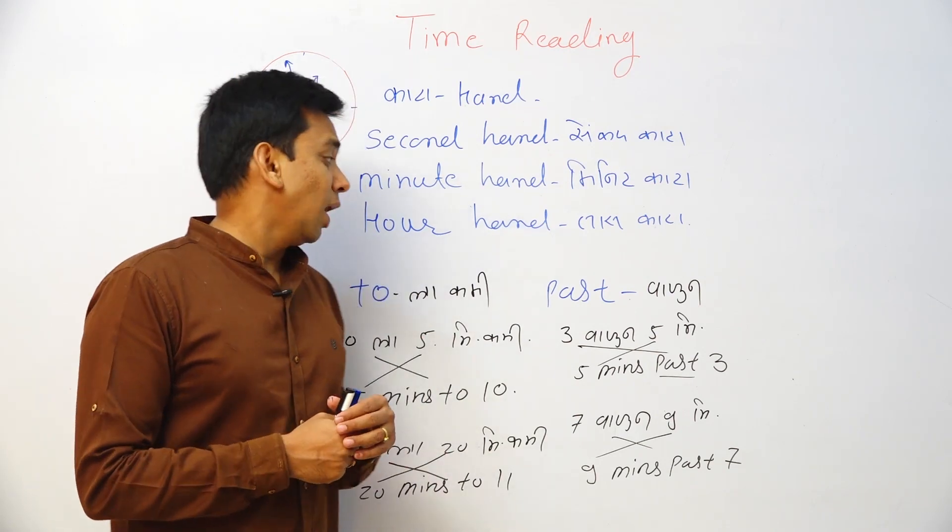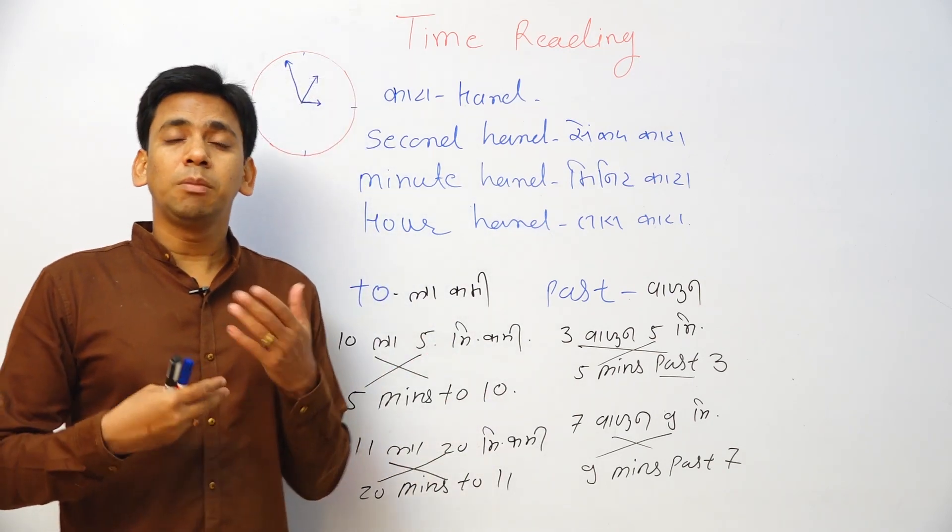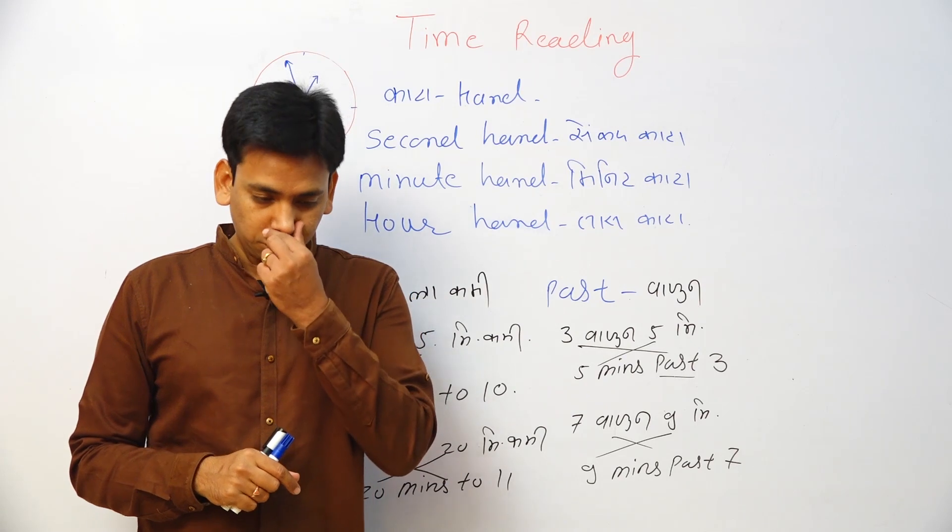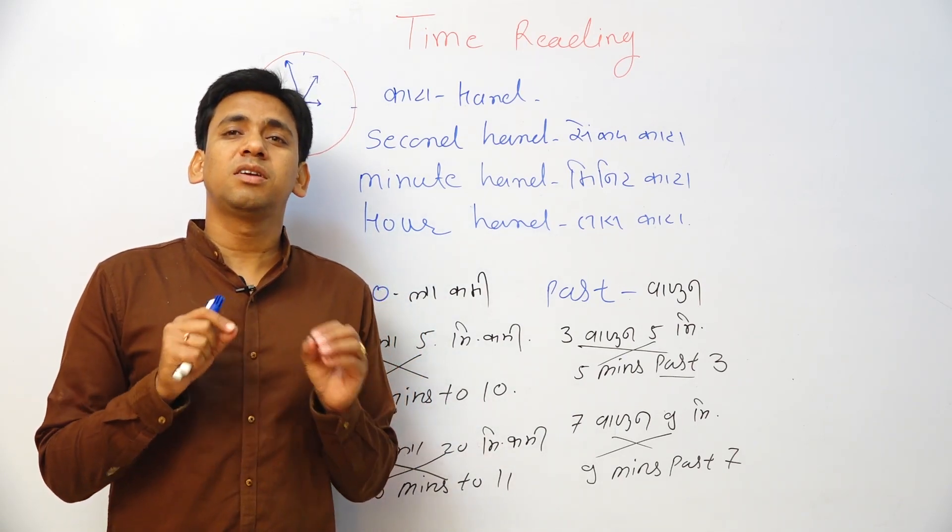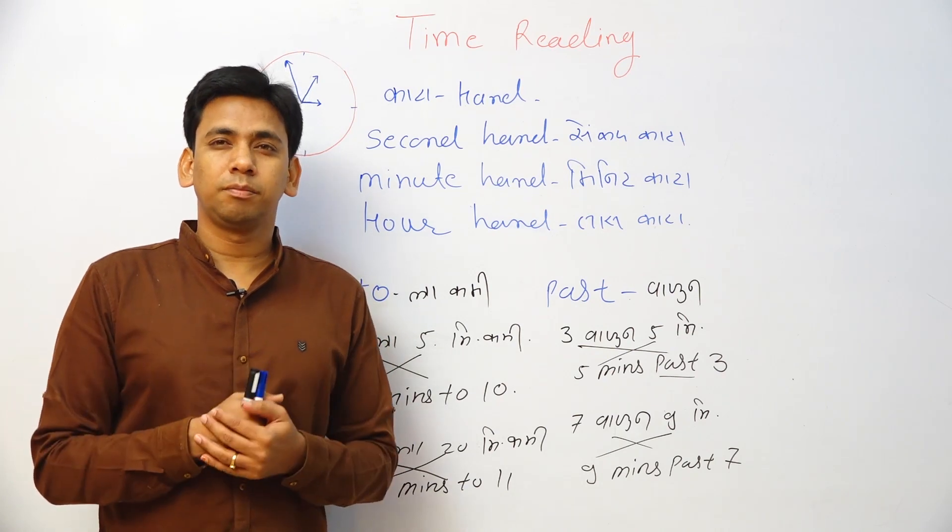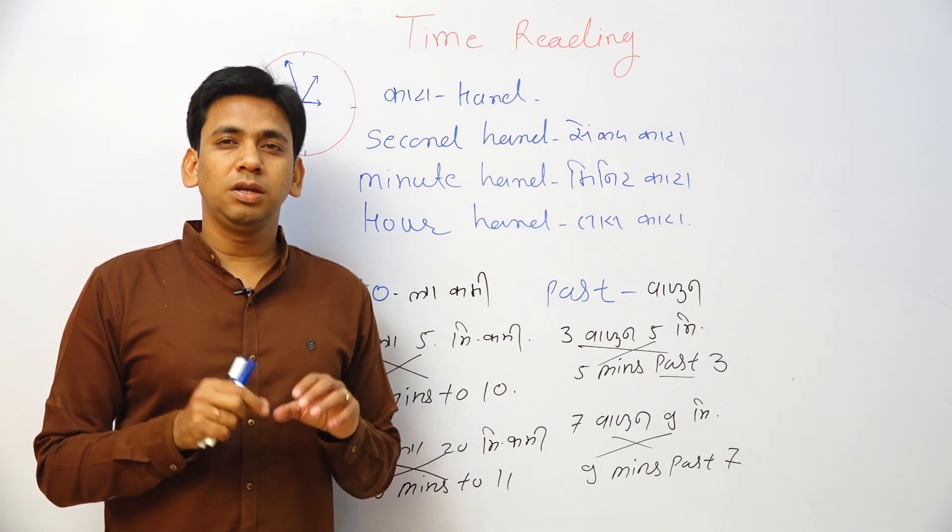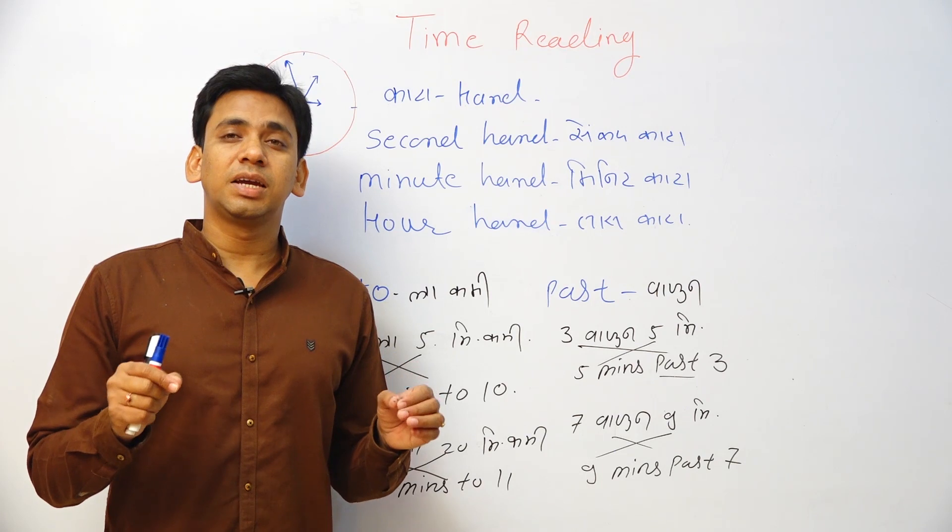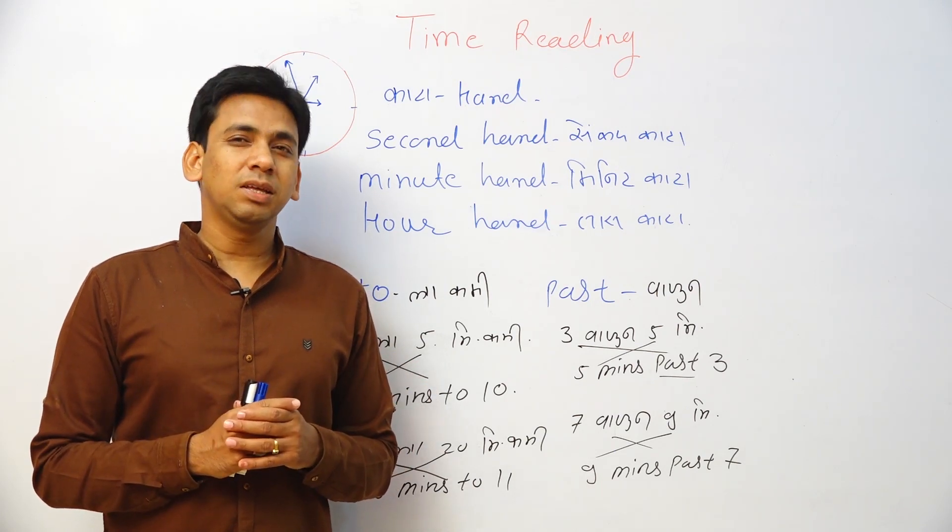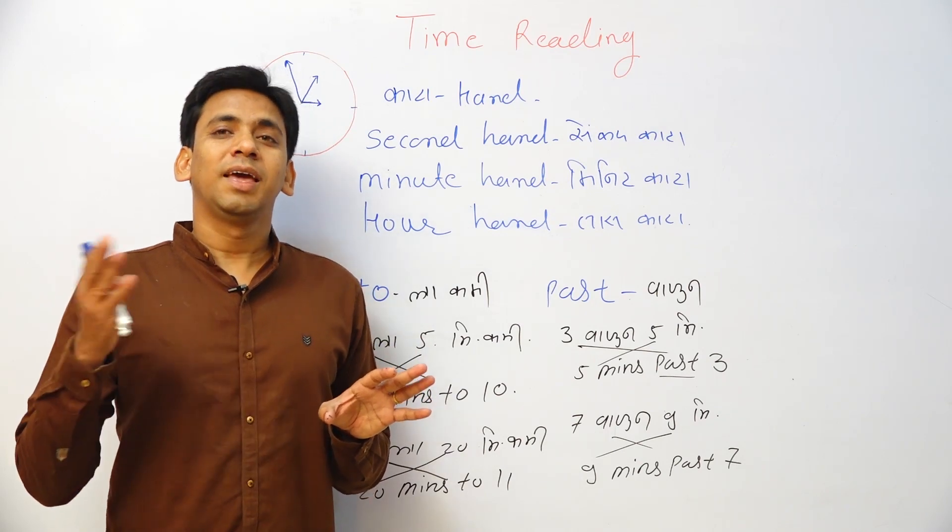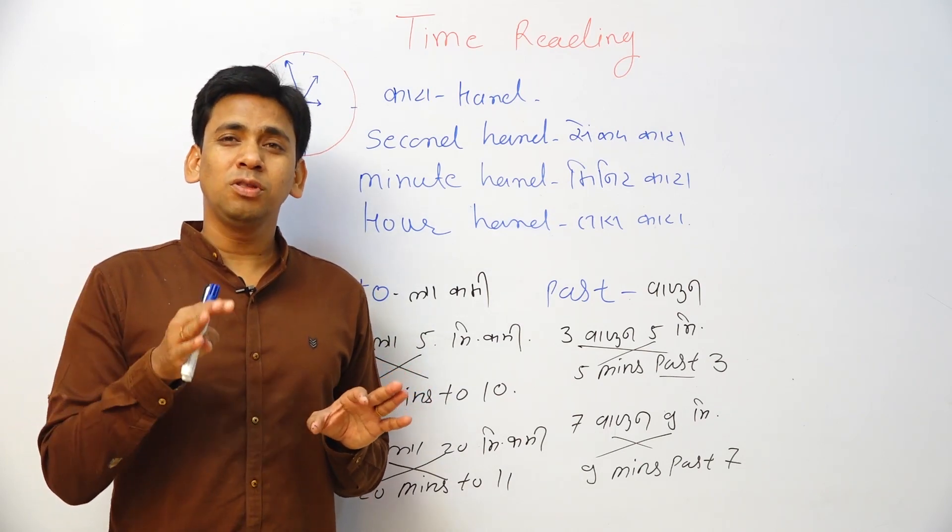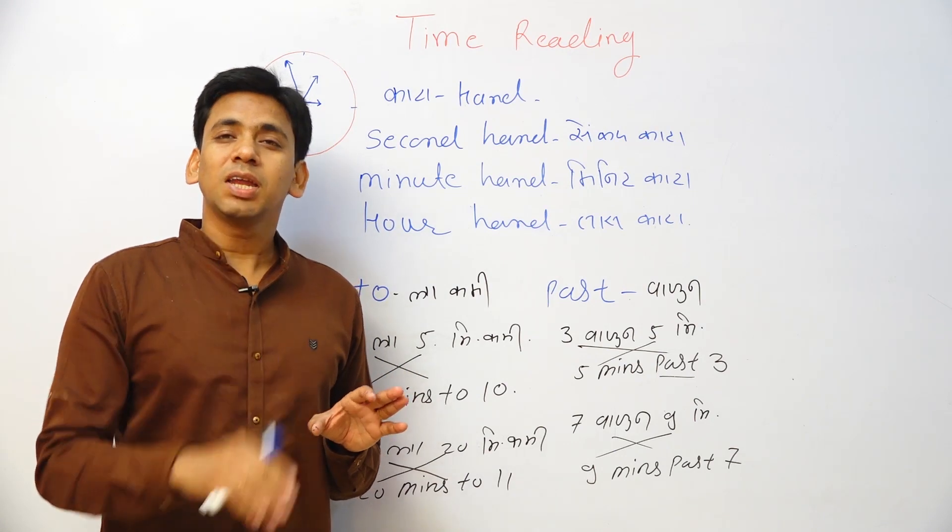Now I am telling you time in English now, you tell me in Marathi. Thirty minutes past eight. Thirty minutes past eight. Thirty minutes, past means plus eight. 8 o'clock plus 30 minutes. Very good, correct.